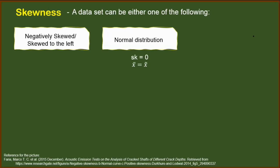We have the normal distribution. We can say that a certain dataset is normally distributed if the skewness is equal to zero and it means that the mean is equal to the median. However, if we have a negatively skewed distribution or skewed to the left, we can say that the skewness is actually less than zero and the mean is less than the median.